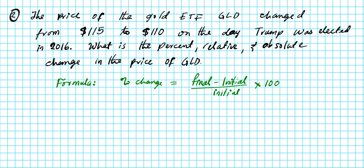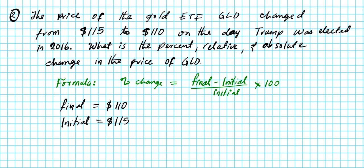The final value is the final price of the GLD ETF after the election figures came out — that was $110. The initial price was $115 before the election. So let's compute the percent change using these two values.